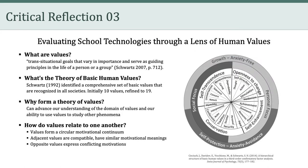Notably, Schwartz and colleagues argued that human values form a circular motivational continuum. Accordingly, any adjacent values, such as conformity, humility, and tradition, are compatible and have similar motivational meanings. On the other hand, opposite values, such as humility and hedonism, express conflicting motivations. In this class, we can use a theory of human values like this one — there are many others — to help us evaluate specific educational technologies, such as the ones you explored in Critical Reflection 3.